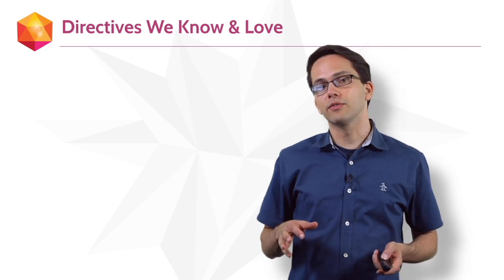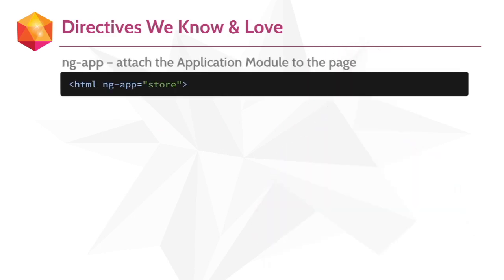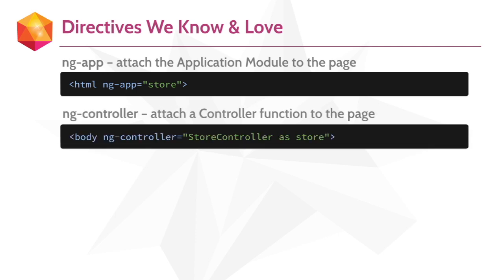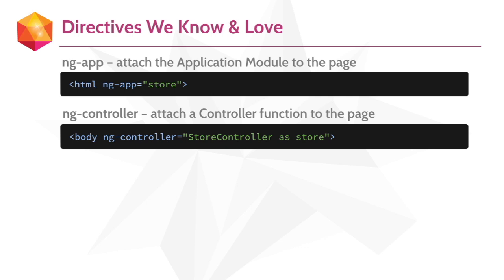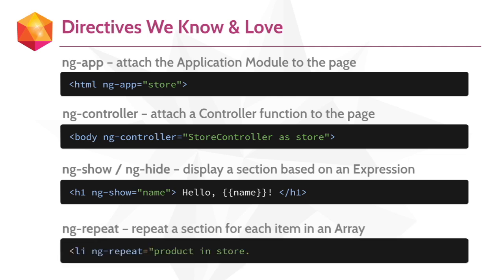To review some of the directives we've gone over: we've got ngApp, that's how we attach the application module to the page. We have ngController, that's how we attach a controller function to the page. We have ngShow and ngHide, to display or hide a section based on an expression. And we have ngRepeat, to repeat a section for each item in an array.